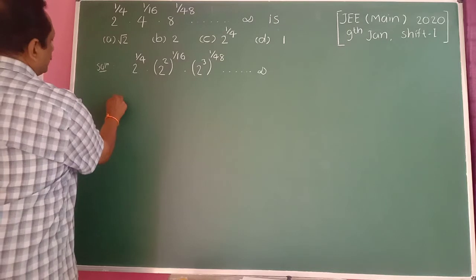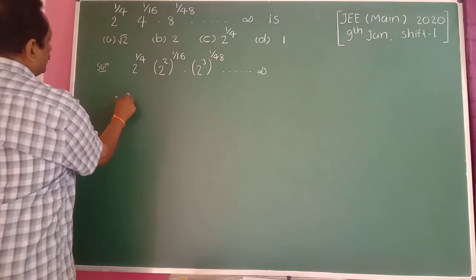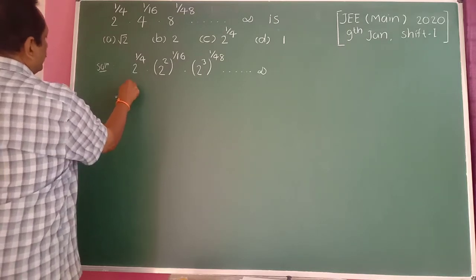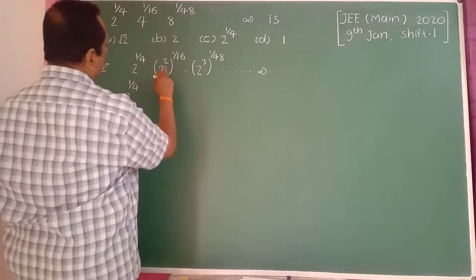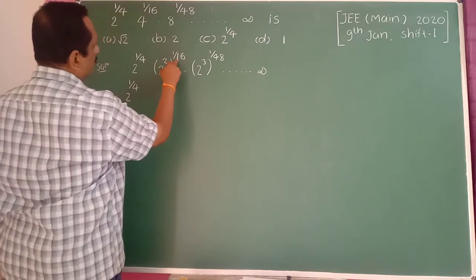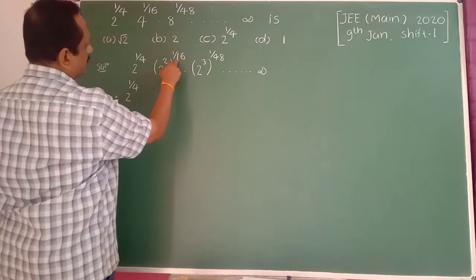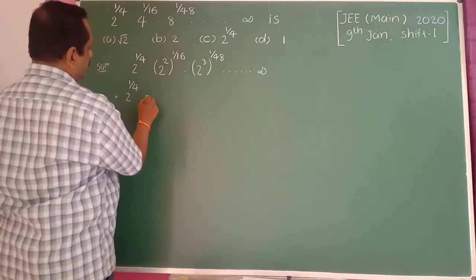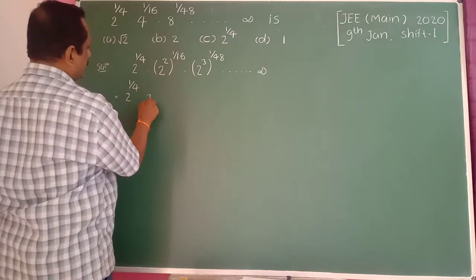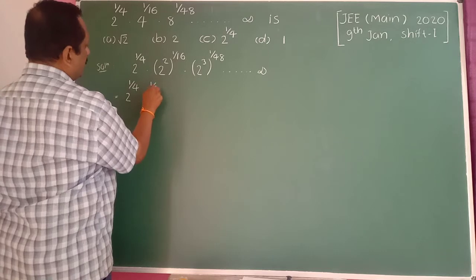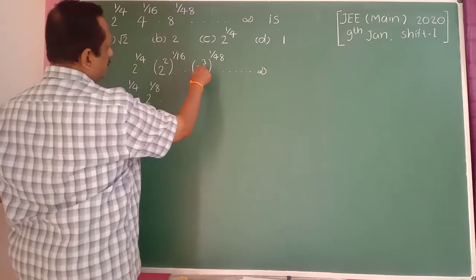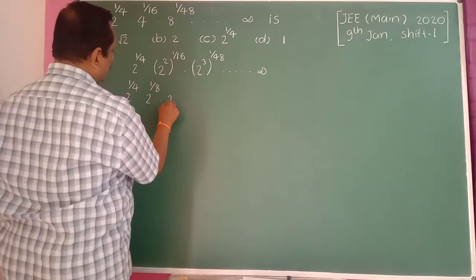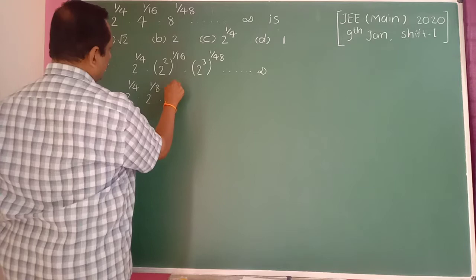Therefore, this is equal to 2 raised to 1/4, into 2 raised to 2 times 1/16, which gives 2 raised to 1/8, then 3 times 1 over 48 gives the next term.